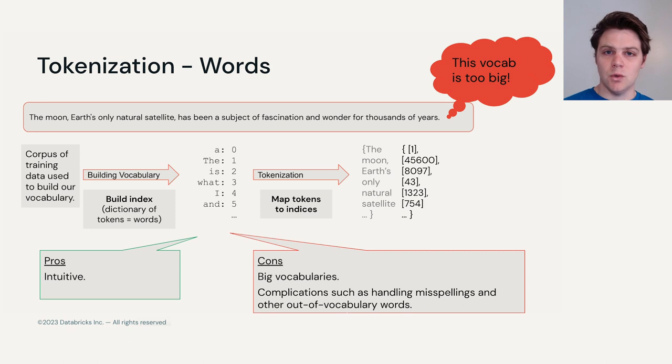We could start with the first word, give it the number zero, and then go all the way through for the rest of the dictionary. This would build up our index. And then anytime that we see a new sequence of tokens, a new sequence of words in this case, we could convert that to a list of indices, numbers, so that we could codify this as a series of numbers that our models could then work with.